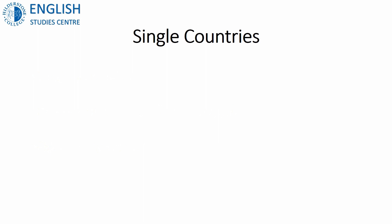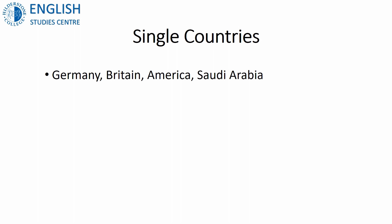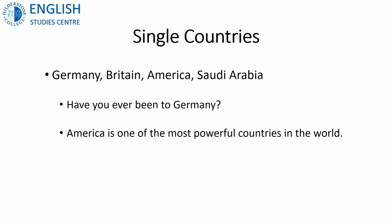So let's have a look at the examples, because that always makes it easier. The examples of single countries are places like Germany, Britain, America, Saudi Arabia. You can say things like: 'Have you ever been to Germany?' 'America is one of the most powerful countries in the world.' 'Saudi Arabia is in the Middle East.' So you can see with each of the single countries we don't use 'the' — it's not 'the Germany' or 'the America' or 'the Saudi Arabia'.